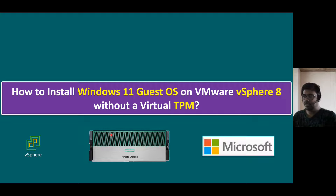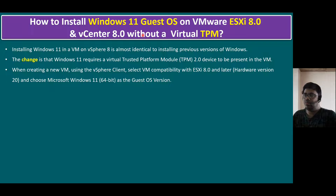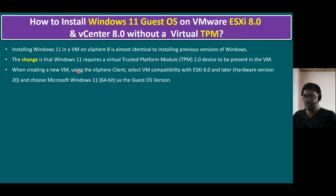One key point here is, we already know how to create a virtual machine and how to install the Guest OS in a vSphere environment. But the difference is, installing Windows 11 in a virtual machine on vSphere 8 is almost identical to installing previous versions like Windows 8, Windows 10, and other editions — except that Windows 11 requires a virtual TPM version 2.0 device to be present in the virtual machine.